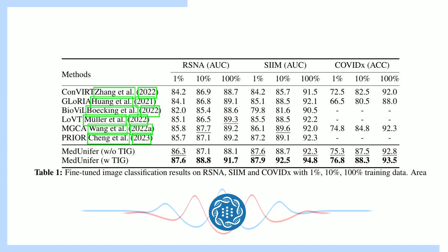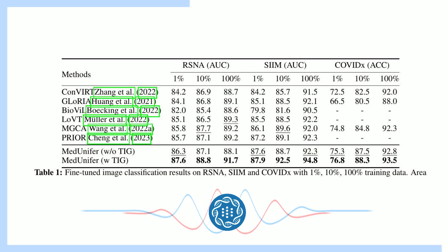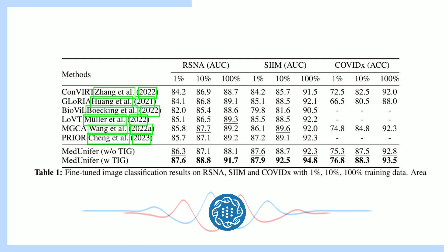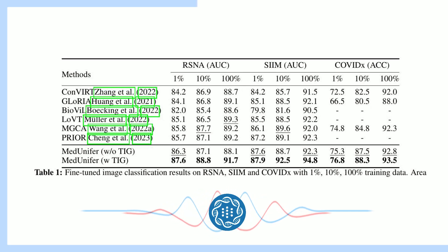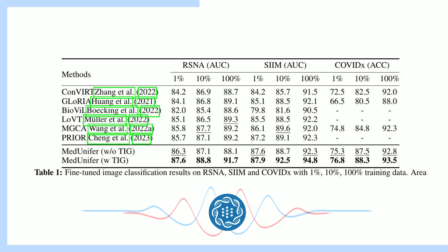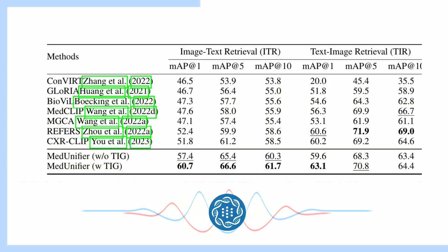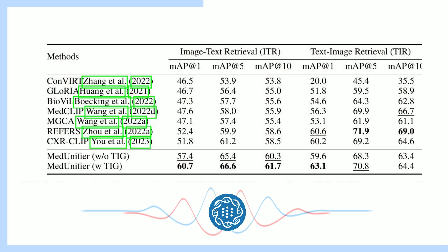Think about how difficult it is to study rare diseases — you often have very limited data and images to work with, which hinders progress. But with MedUnifier, researchers could potentially generate hundreds or even thousands of realistic images based on expert descriptions of those rare conditions. It could be a real game changer, allowing scientists to study rare diseases in more depth and develop new treatments much faster.